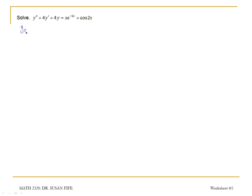For my complementary solution, letting y equal e to the mx, my characteristic equation is going to be m squared plus 4m plus 4 is equal to 0. And m squared plus 4m plus 4 factors into m plus 2 times m plus 2. Notice we have a repeated solution: m is equal to negative 2, multiplicity 2.